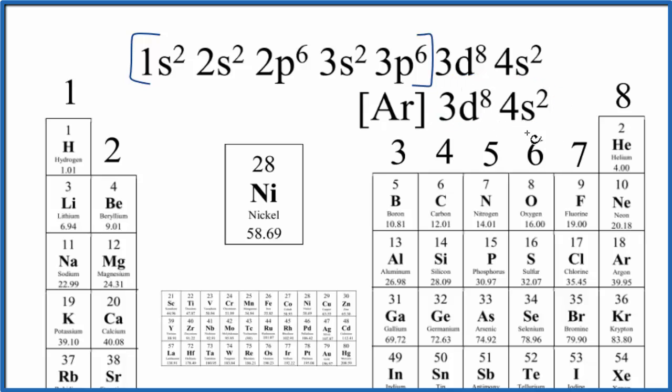But note that all of these won't necessarily be used in bonding. This is Dr. B with the number of valence electrons for nickel. And thanks for watching.